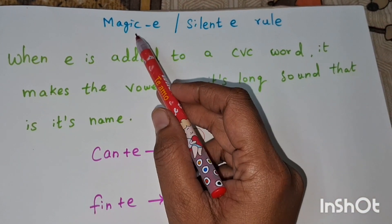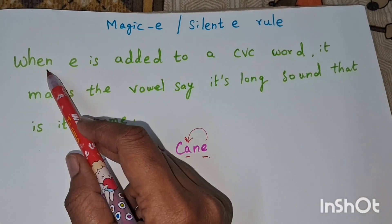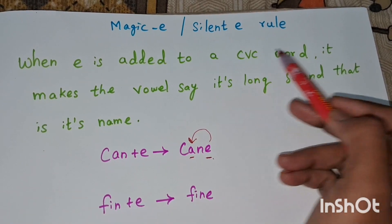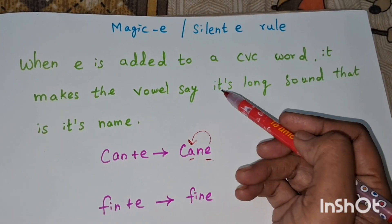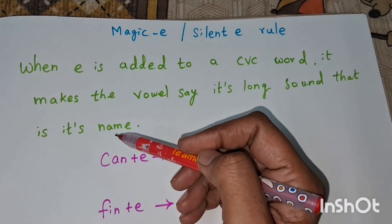Hello everyone, today's topic is magic e or silent e rule. When e is added to a CVC word, it makes the vowel say its long sound, that is its name.